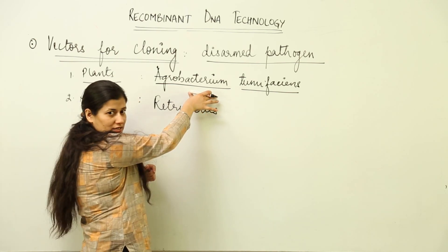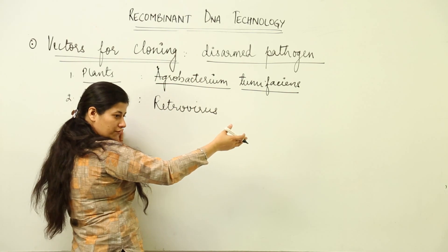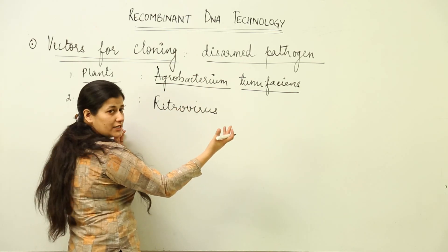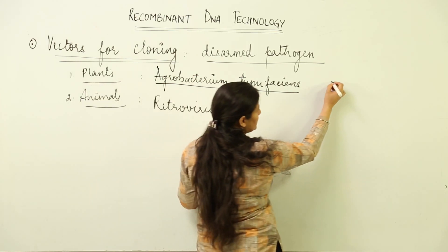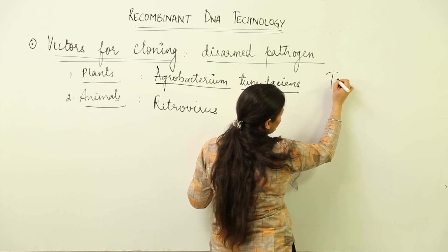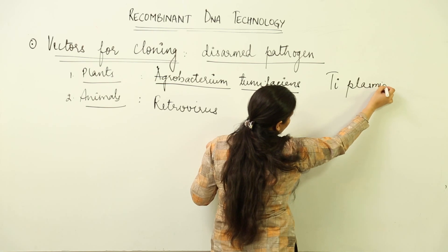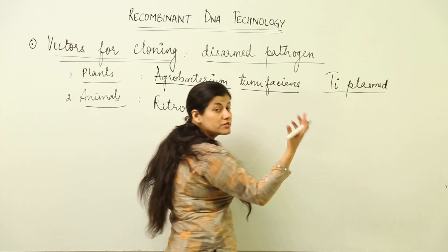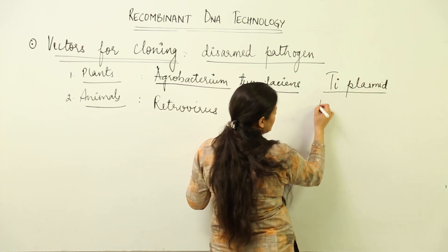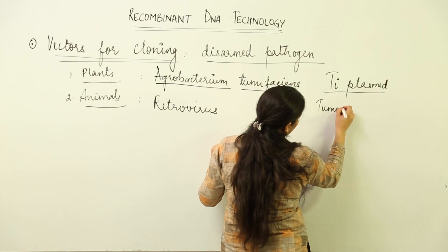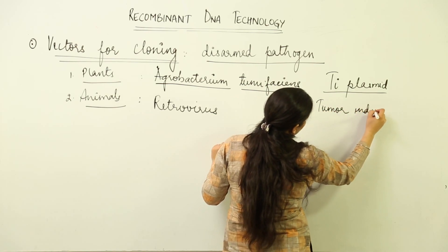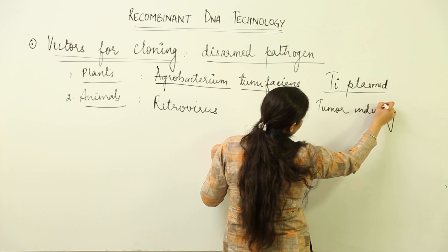Same is in the case of Agrobacterium tumefaciens. It has the ability to infect, that is its nature, but it has one plasmid that is known as tumor-inducing plasmid. As you know, this plasmid has the ability of self-replication because it is a plasmid. This Ti stands for tumor-inducing.